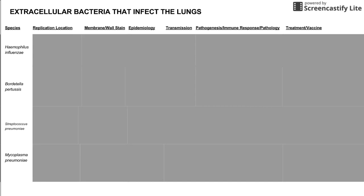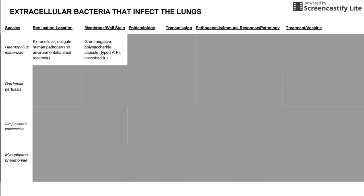Haemophilus is an extracellular bacteria and an obligate human pathogen, which means it cannot live in the environment and cannot live in animals. It's a gram-negative organism with a polysaccharide capsule around that gram-negative cell wall. This polysaccharide capsule is important for treatment and the vaccine, and we categorize these capsules by letter A through F.